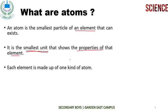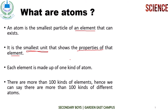Each element is made up of one kind of atom. For example, all the atoms in calcium are identical and same. But the atoms of calcium are different from the atoms of chromium — chromium is a different element and all its atoms are the same as each other. There are more than 100 kinds of elements, and hence more than 100 kinds of different atoms. Different types of elements are made up of different types of atoms.